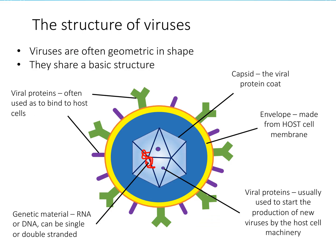Let's have a look at the structure of viruses. They are geometric in shape and share a basic structure. You can see the capsid — the viral protein coat — the envelope which is made from the host cell membrane, viral proteins which are usually used to start the production of new viruses by the host cell machinery, genetic material which is RNA or DNA and can be either single-stranded or double-stranded, and viral proteins which are often used to bind host cells.